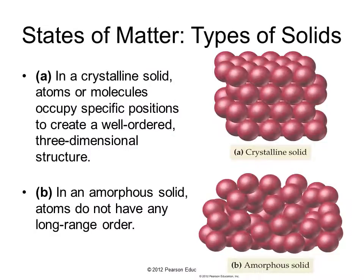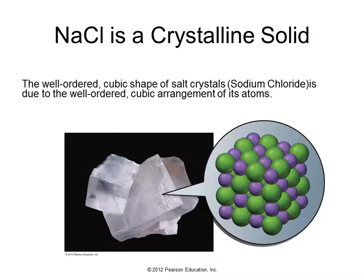There are two different kinds of solids. A crystalline solid, such as this one, is very orderly and neatly arranged. Or an amorphous solid, in which the atoms are closely packed but not in perfect order. Sodium chloride is a crystalline solid — here you see the well-ordered arrangement of sodium ions and chlorine ions, giving it this cubic crystalline shape.